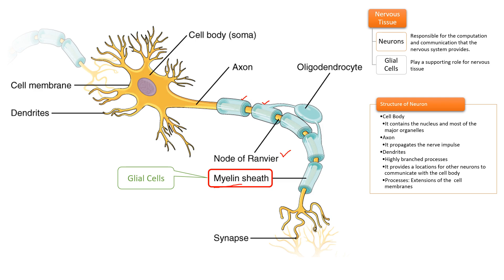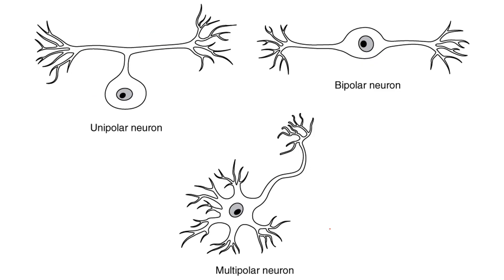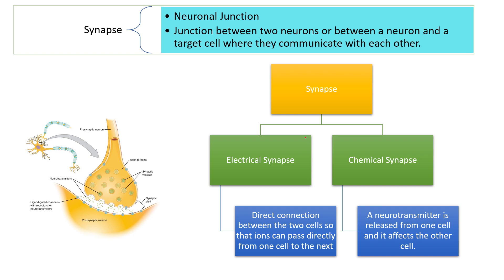So we have the cell body, the axon, and the dendrites. Information comes from the dendrites to the cell body and reaches the axon, finally to the axon terminals, also called synaptic knobs, which contain synaptic vesicles. Depending on the number of processes, neurons can be of three types: unipolar (one process), bipolar (two processes), and multipolar (more than two processes). What we discussed is the structure of a multipolar neuron, which is commonly found in the body.